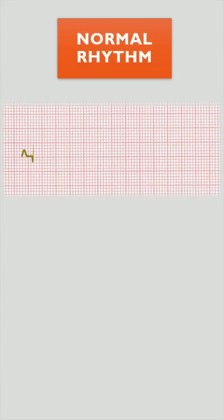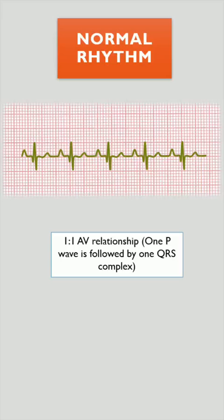This is the ECG of a patient with normal sinus rhythm. Try to identify P waves and QRS complexes. Each P wave is followed by one QRS complex. So 1-to-1 AV relationship is maintained, which happens in normal sinus rhythm.